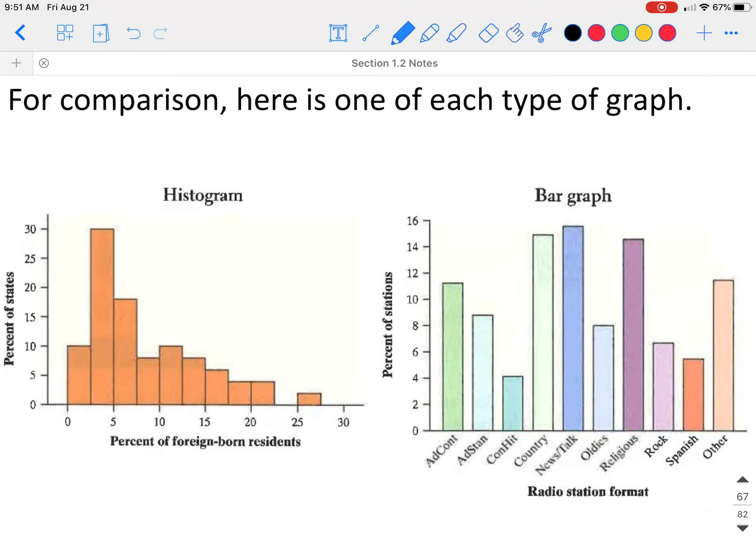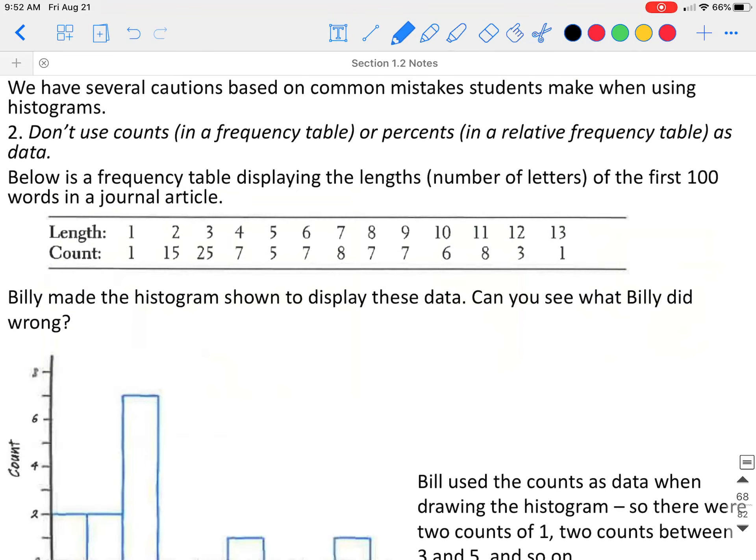The graph on the left is a histogram. As you can tell, we have the class variable on the bottom. On the right, we have a bar graph. Those are giving the categories or the categorical variables.